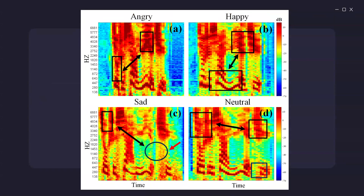Mel spectrogram provides a compact representation of the audio signal and captures relevant features that enhance the performance of ML models. A very important point about Mel spectrogram is that it is designed to align with human-perceived sound frequencies. It emphasizes lower frequencies, reflecting human hearing sensitivity to sound, making it more effective for audio analysis. It provides information about spectral characteristics, and peaks and patterns in the Mel spectrogram can indicate specific frequencies in the audio signal.